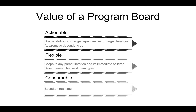The program board provides the following key value proposition. It's actionable — you can change dependencies or target iterations, and you can add or remove dependencies. It's flexible — you can scope to the level that you're interested in. For example, you can select any parent iteration and its immediate children, and select the parent or child work item types that you're interested in. It's consumable — the data is based on real-time.